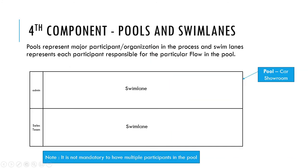The fourth component of BPMN is called pools and swimlanes. Pools represent major participants of the organization in the process, and swimlanes represent each participant responsible for a particular flow. For example, a car showroom is a pool, and admin and sales team are the participants inside the showroom. It is not always mandatory to have multiple participants in a pool.